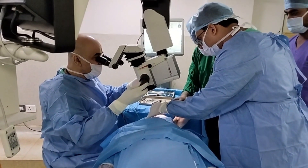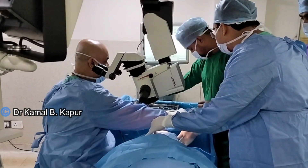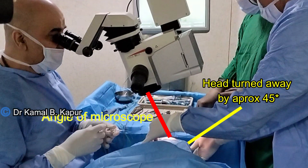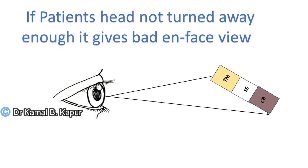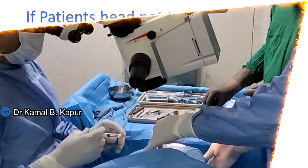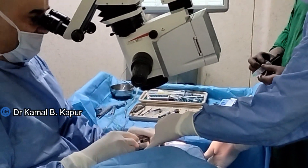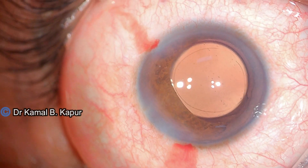It's a very good idea to have somebody hold the patient's head away from the surgeon so there is an angle of approximately 80 to 90 degrees between the microscope and the patient. If this is done properly, we will get an en-face view of the trabecular meshwork, the scleral spur, and the ciliary body. But if the rotation of the head or the microscope tilt is not adequate, all three structures will appear collapsed and separating each one of them will become tricky. So it's very important to have a microscope that can be tilted and an assistant who can turn the patient's head.